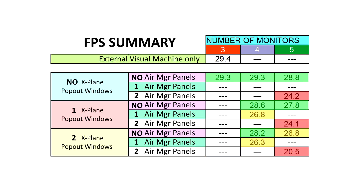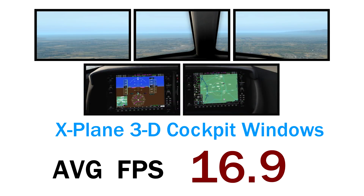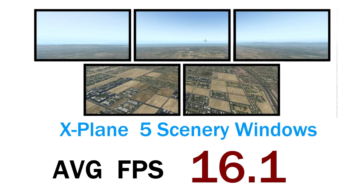A warning in case you're thinking of just running extra monitors as actual scenery windows instead of pop-out windows: I tried running all five monitors using the 3D cockpit and got an average frame rate of 16.9. I also tried running all five monitors on scenery only and got an even worse frame rate of 16.1. So that's definitely not the answer.